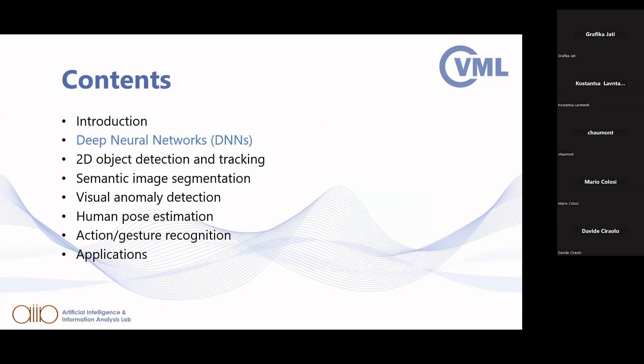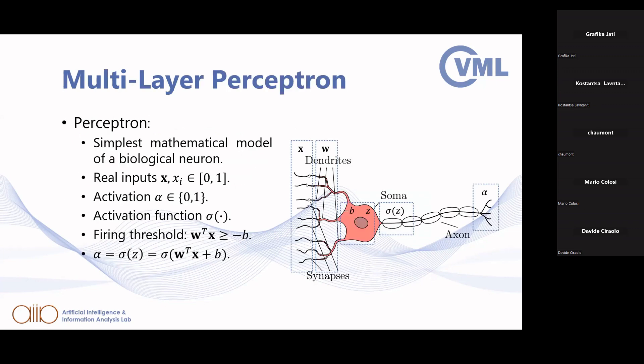Now let's see which are the most common types of deep neural networks used to develop such smart systems. We will start with the perceptron, which is the simplest mathematical model that tries to simulate the functionality of a biological neuron.